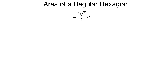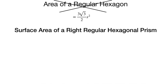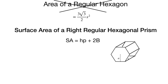The whole purpose of this video is to find the surface area of a right regular hexagonal prism. We went through all that work to find the area of a regular hexagon, and now we'll use 3√3 over 2 times S² to actually find the surface area of a prism. Reminding ourselves: the surface area formula for any right prism is HP plus 2B, where H is the height of the prism, P is the perimeter of the base, and uppercase B is the area of the base — which for a regular hexagonal prism are regular hexagons.